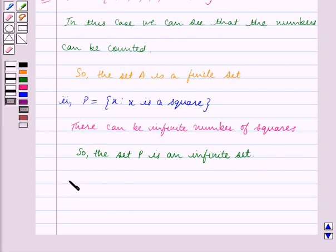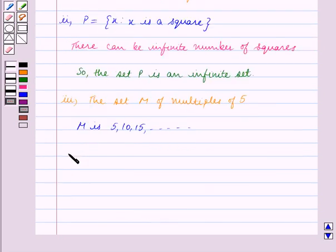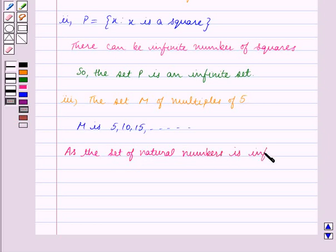Third part is the set M of multiples of 5: 5, 10, 15 and so on. As the set of natural numbers is infinite, the given set M is also an infinite set.